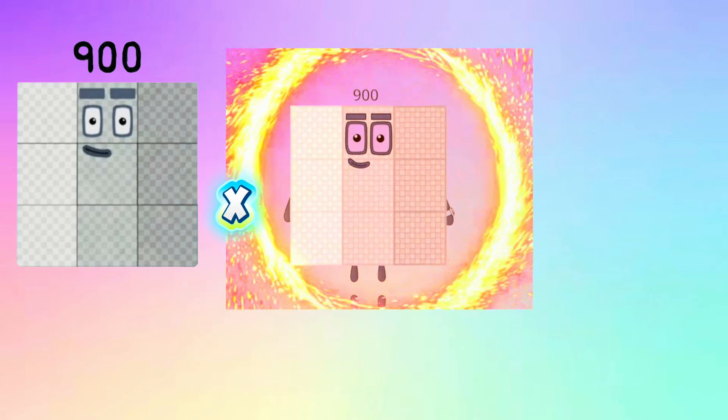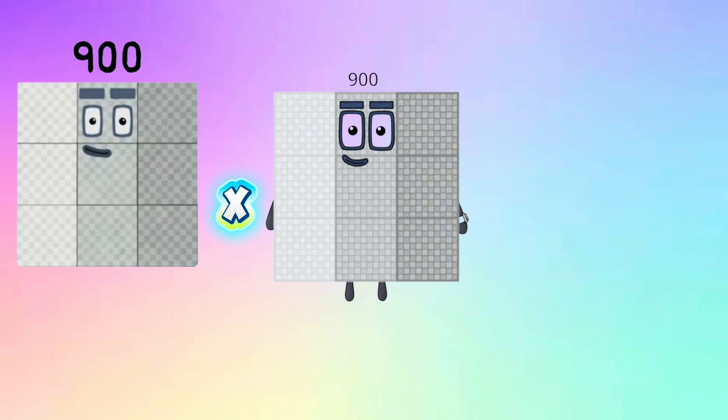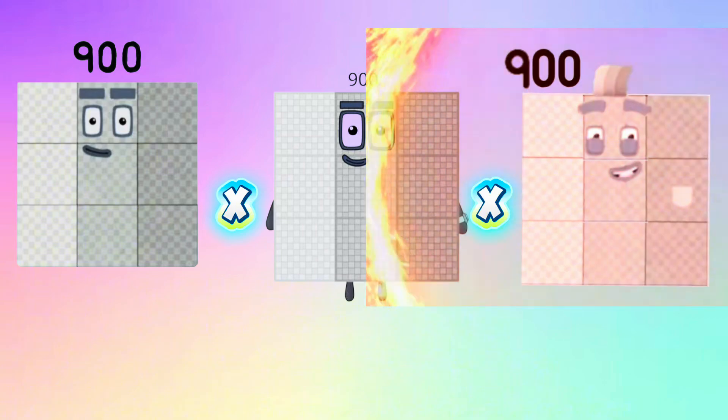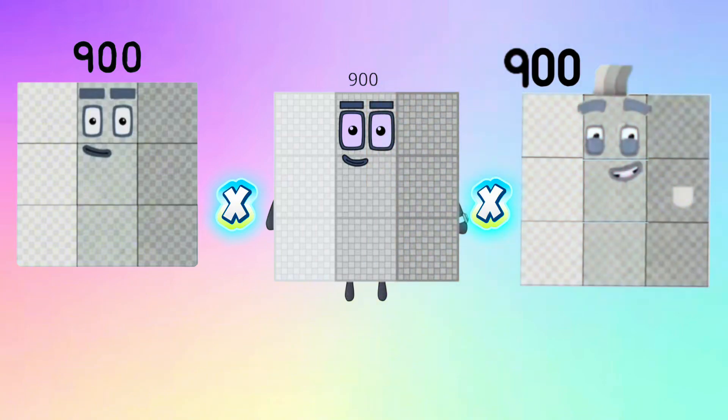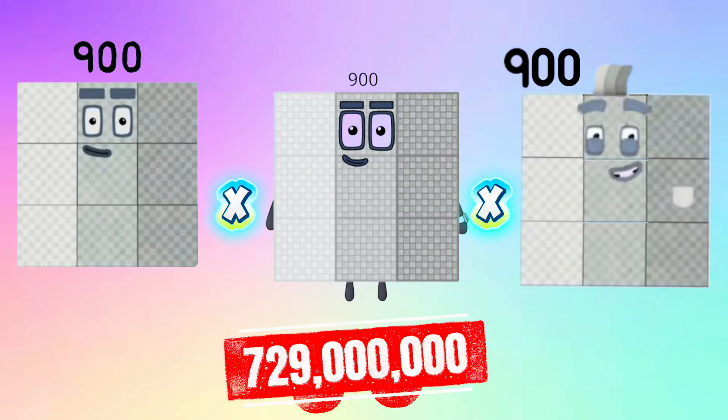900 times 900 times 900 is equals to 729 million.